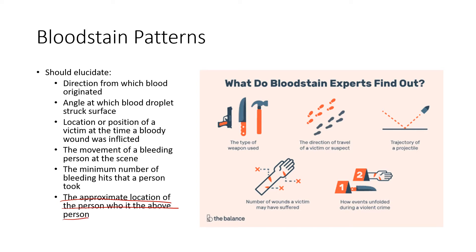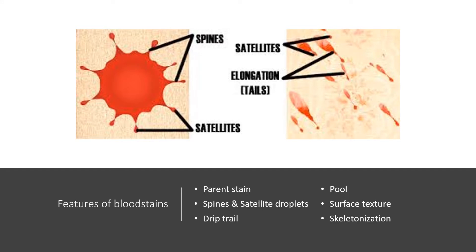The approximate location of the person who was the perpetrator versus the approximate location of the person who was the victim. Major features of bloodstains include the parent stain, spines and satellite droplets, drip trail, a pool, surface texture, and skeletonization.